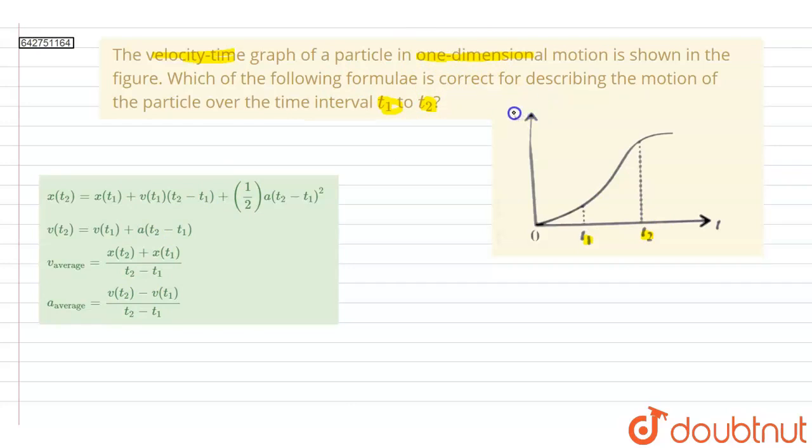Here we have velocity-time graph. This is v and this is time. Now t1 and t2 is given and we can see that this graph is a curve. It is not a straight line. And we know that acceleration a is given as dv/dt, the differential of velocity with respect to time. For a v-t graph this can be the slope of the graph, and that slope is given as tan θ.